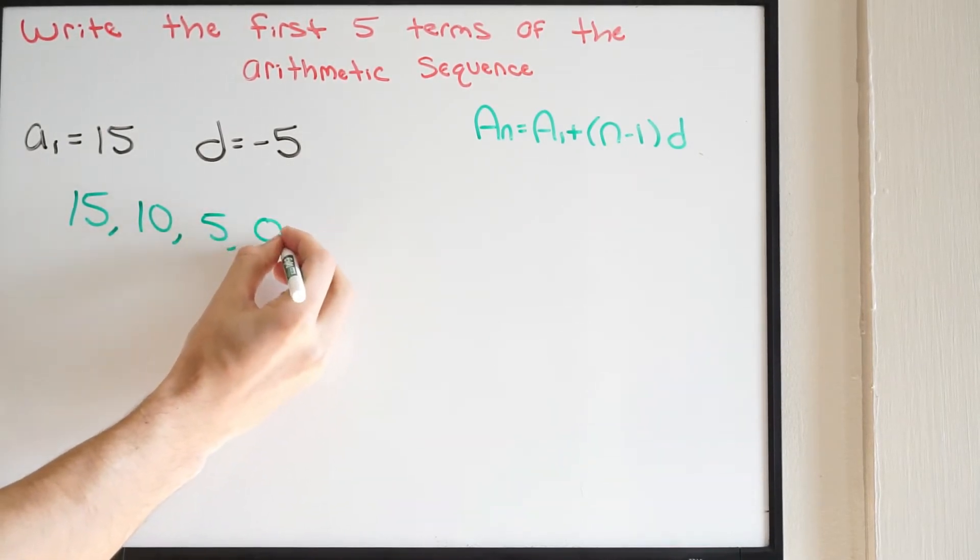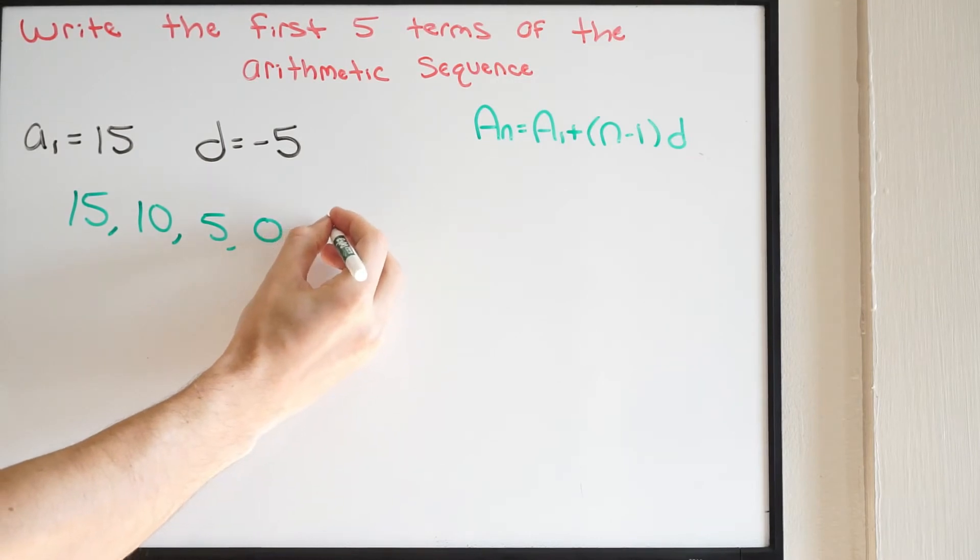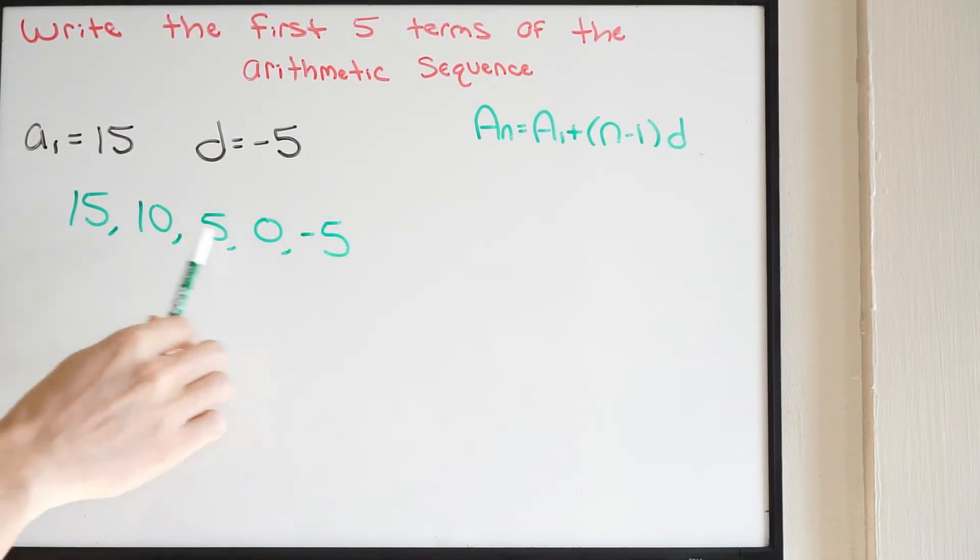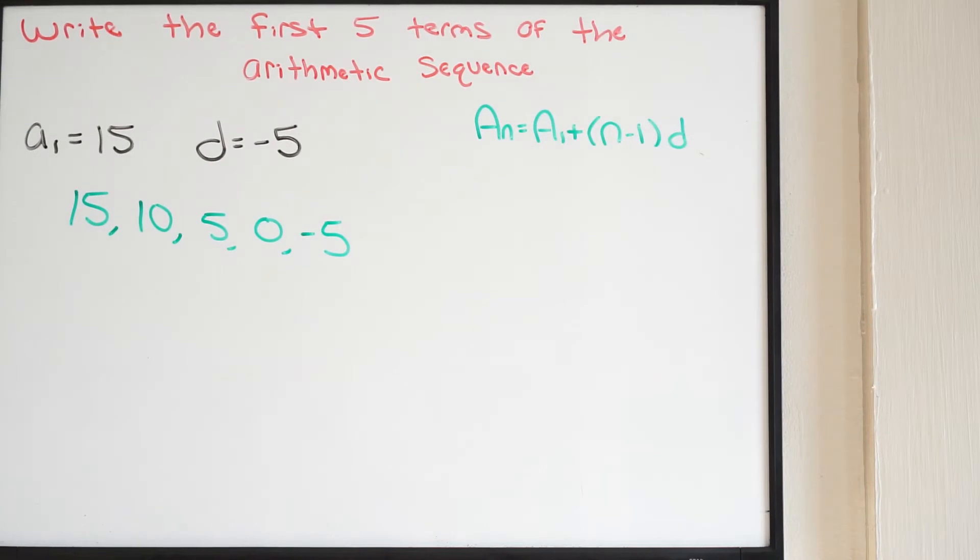Then 0, and then negative 5. So here are our first five terms of our arithmetic sequence.